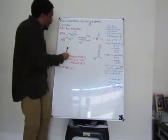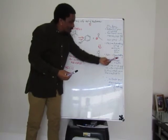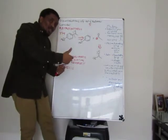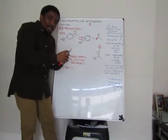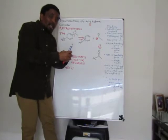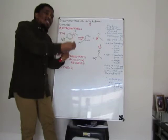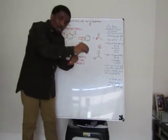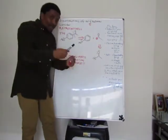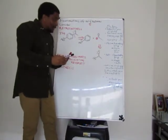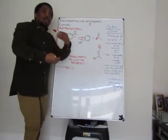Deactivating groups — for example, a keto group is an example of a deactivating group. A deactivating group directs to the meta position. So if you've got a benzene ring with a keto group, whatever comes into that ring will be directed towards the meta position. That's very, very important.